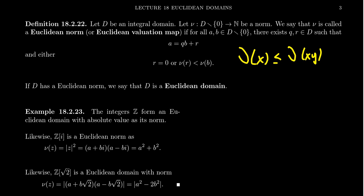We say that a norm is a Euclidean norm. Again, there's some other vocabulary people can use here. We'll call it just a Euclidean norm in this situation. A norm is Euclidean if for all elements A and B inside of the non-zero elements of the domain, there exist elements Q and R, which they could possibly be zero, such that A equals QB plus R. And in particular, this element R is itself either zero or it has a norm that is strictly less than the norm of B.